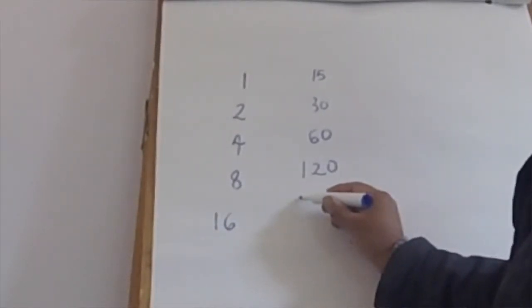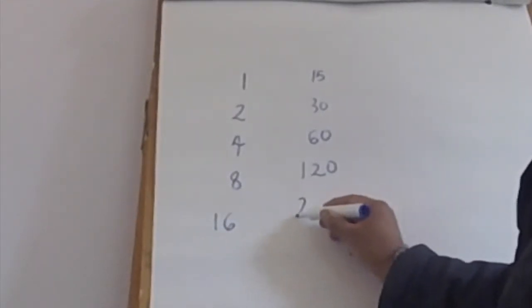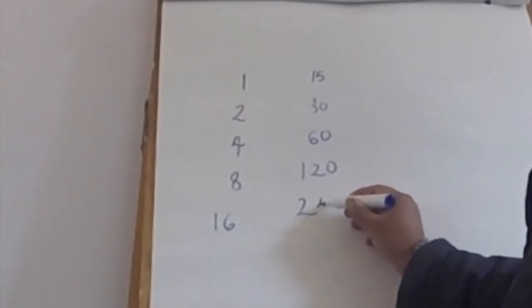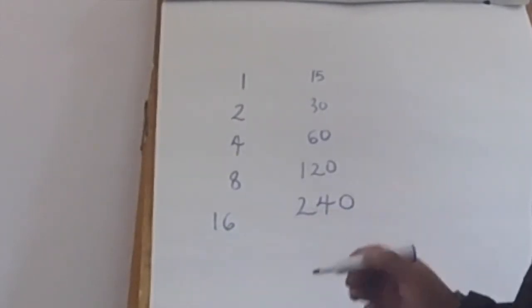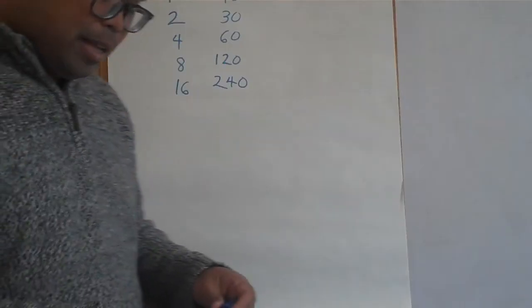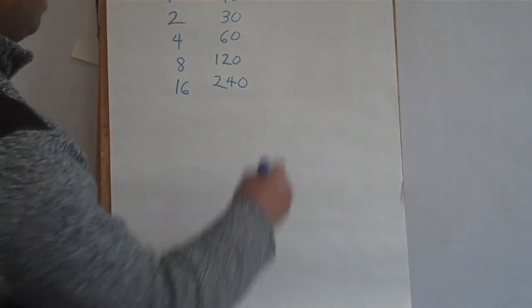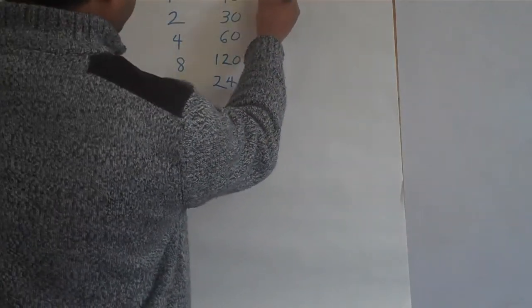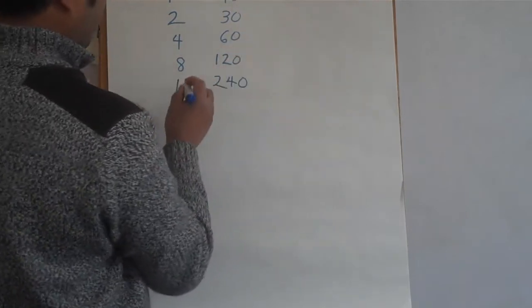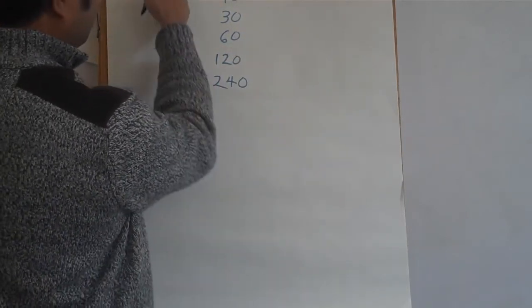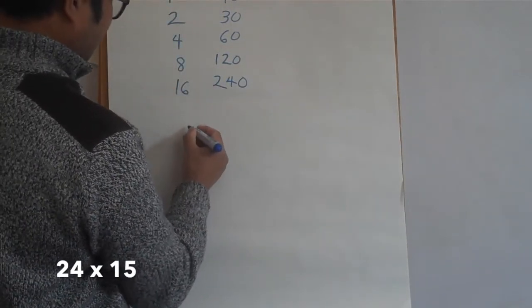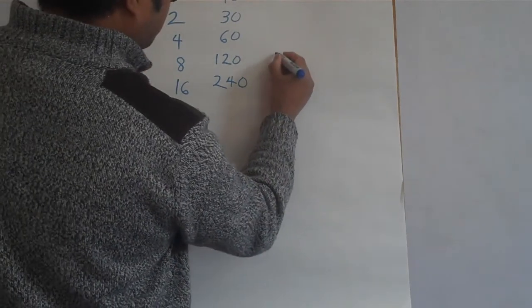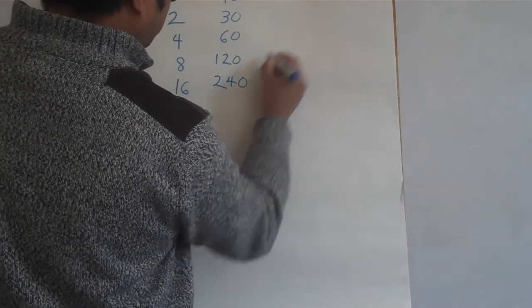What's double of one hundred and twenty? Two hundred and forty. Now that's basically what it is. So here I'm going to look at it — that's twenty-four, right?